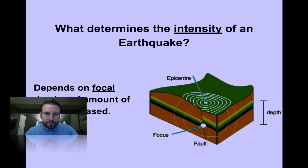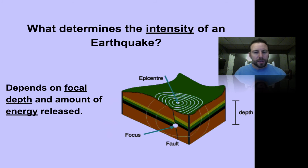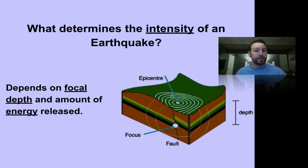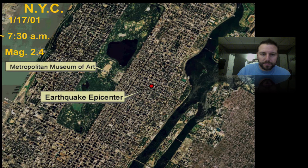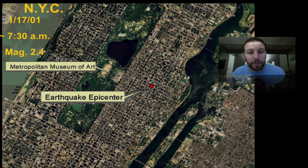What determines the intensity of an earthquake is the depth and the amount of energy released. If plates are pushing and not moving, and then all of a sudden give way, the amount of built-up energy is going to make it big. For example, in New York City — going back to 2001 — there was a small earthquake of magnitude 2.4, and we've had a 4.0 right off the coast of Montauk nearby.